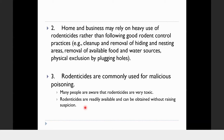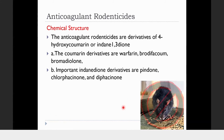Rodenticides can be bought at any hardware store — as simple as that. Focusing on anticoagulant rodenticides: the chemical structure of this group is basically derived from 4-hydroxycoumarin or the indandione group. These are the two major groups of anticoagulant rodenticides.